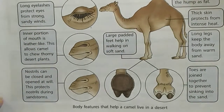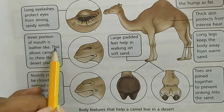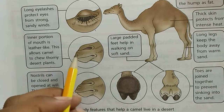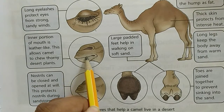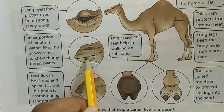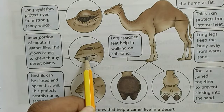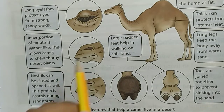Next is: the inner portion of the mouth is leather-like. This allows the camel to chew thorny desert plants. Uthka jo mouth hai, jo mouth ke under ka part hai, woh kaisa leather ka — matlab aise flexible toh hai, lekin aise kodak — hard — kyu? Taki jo plants hote hain desert par, unhe woh kha sake. Isliye uske jo inner mouth hai woh leather ke jaisa hota hai.